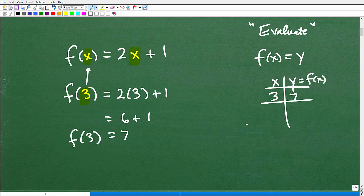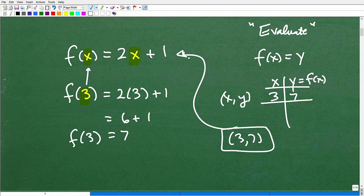So meaning that the point, this is a point. This little table here is a point, an x, y point. So the point 3, 7 is on this graph, is on this function. So these are the basics about functions that you should hopefully kind of know. And then when you get into special functions,